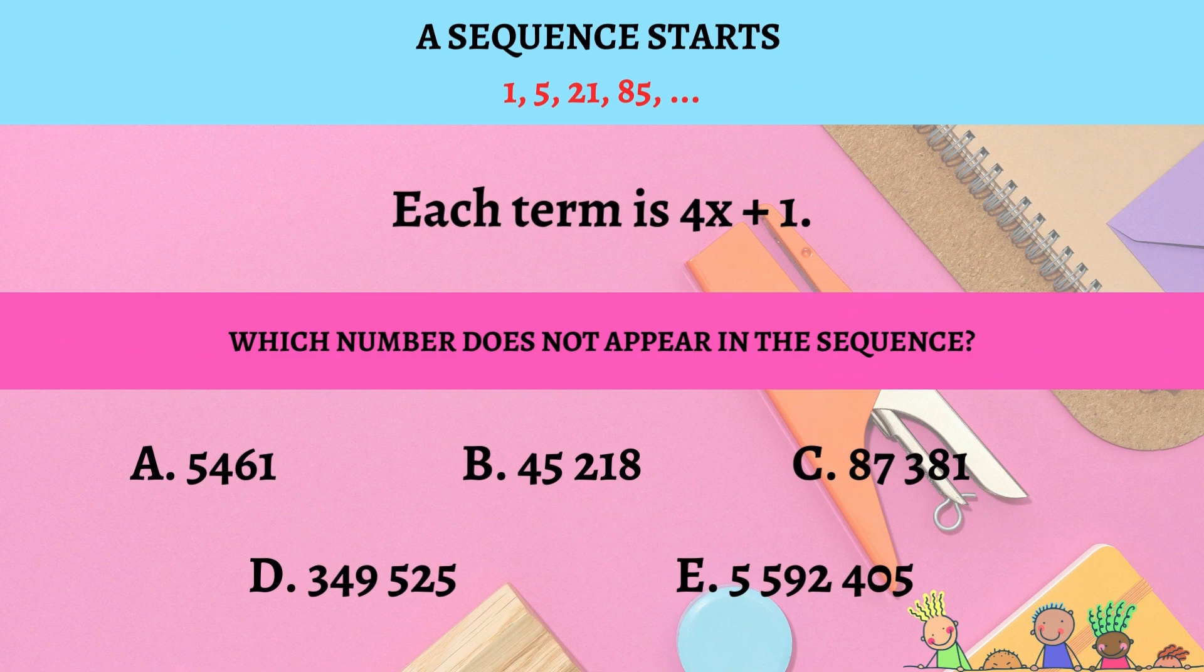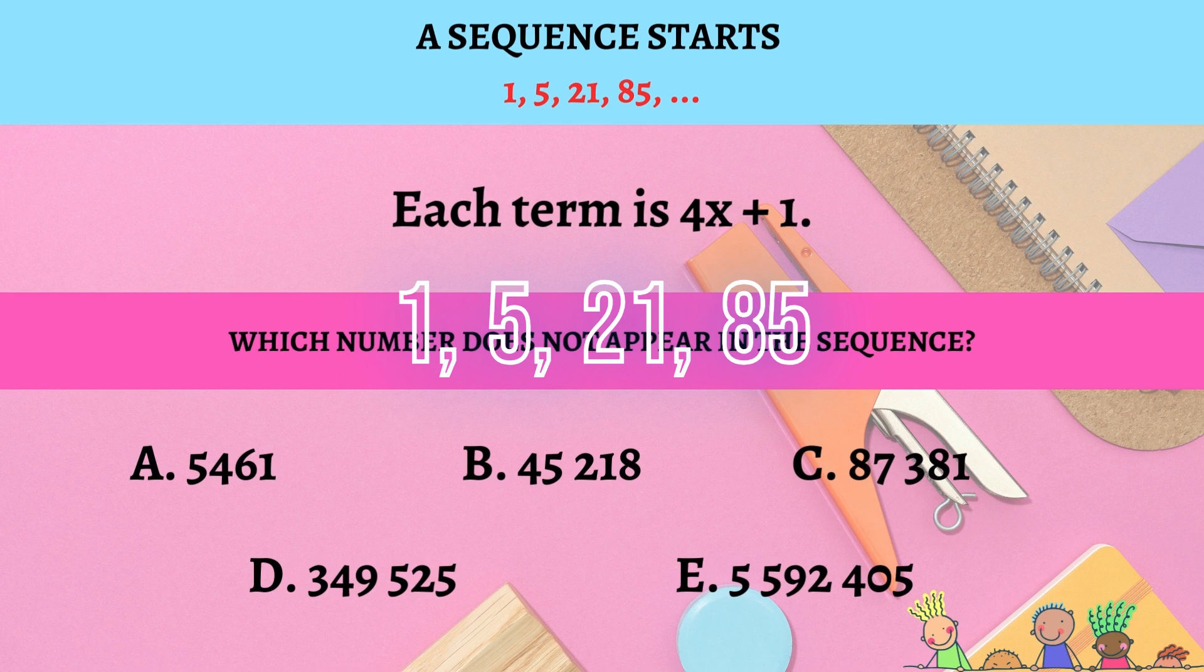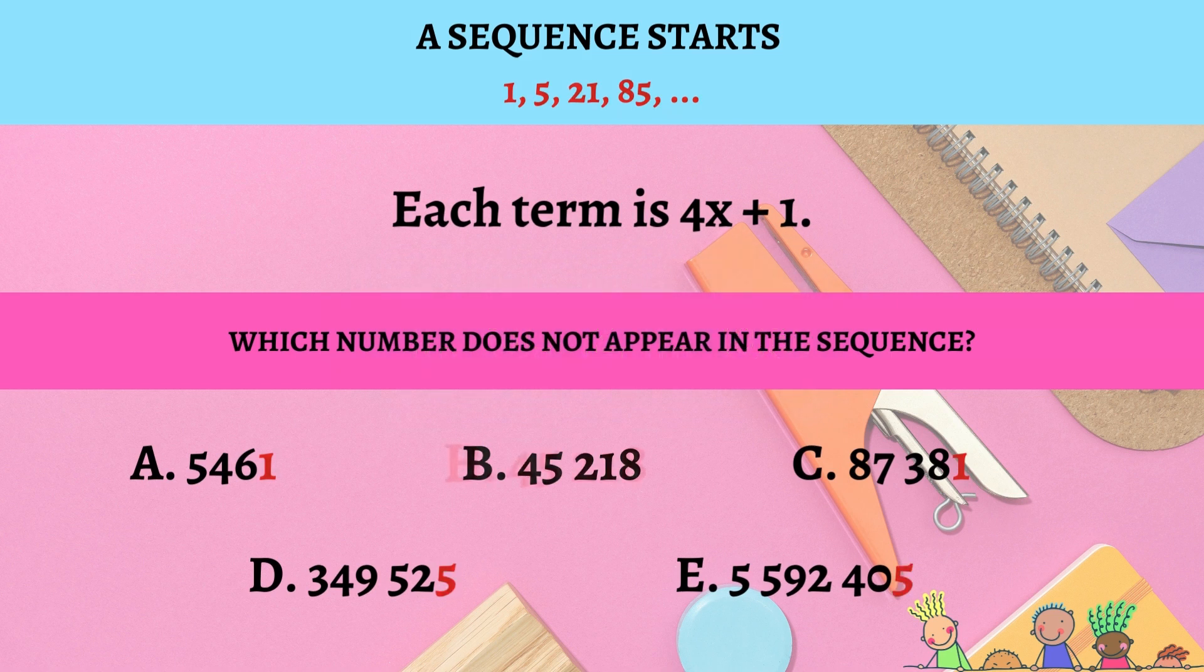The second approach is to simply look at the first four numbers in the sequence. You see how they all have either 1 or 5 in their ones place? That's it, that's your hint. The only choice that does not have a 1 or a 5 in its ones place is choice b.